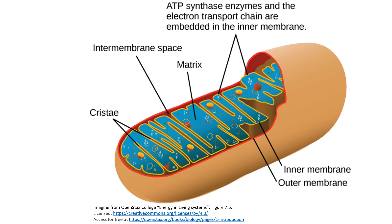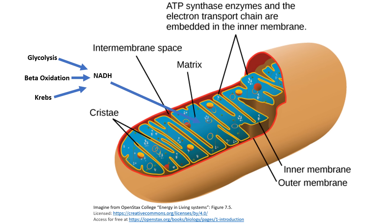Throughout glycolysis, which happens in the cytosol, beta-oxidation, which happens in the matrix of the mitochondria, and the Krebs cycle, which happens in the matrix of the mitochondria, lots of NADH is created. And ultimately, almost all of this NADH is going to exist in the matrix of the mitochondria.